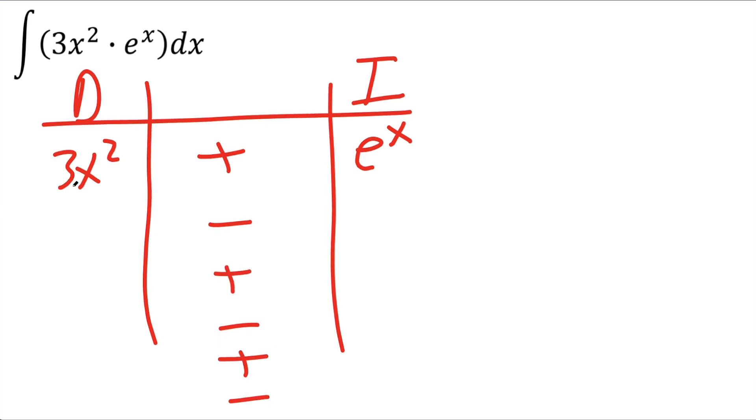At this point, we can get the derivative of 3x squared. And that's going to be 6x. And the derivative of 6x is going to be 6. And the derivative of 6 would be 0. So we don't need these points here.